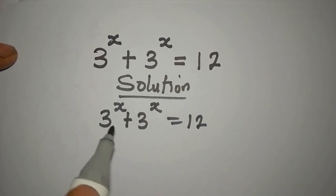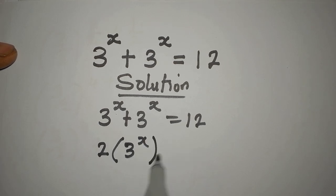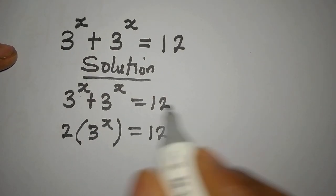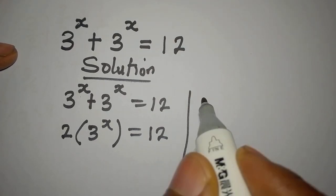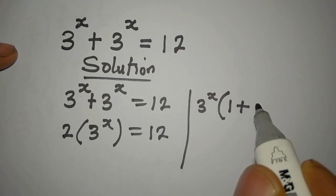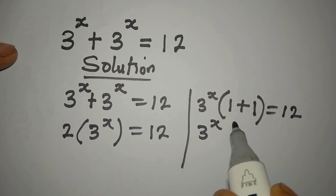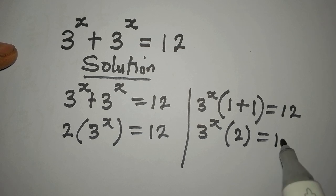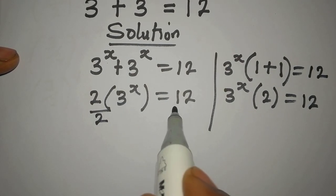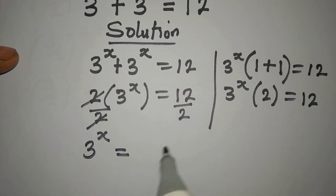So what should we do? If you add this up, you are going to have 2 times 3 to the power of x, and that is equal to 12. You can also factor it: pick 3 to the power of x as a common factor, giving 3^x times (1 + 1) = 12, which is 3^x times 2 = 12. Divide both sides by 2, so 3 to the power of x equals 12 divided by 2, which is 6.